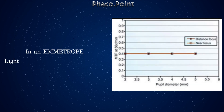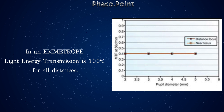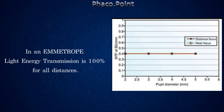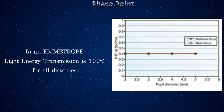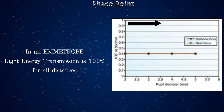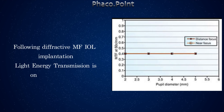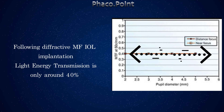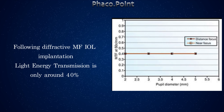A pre-presbyopic emetrope or a presbyope who constantly wears progressive spectacles has the luxury of viewing objects across all distances and at all levels of ambient lighting with 100% transmission of light energy through the entrance pupil. While a patient who has received a diffractive bifocal or trifocal design IOL receives on average only 40% of this light energy transmitted.